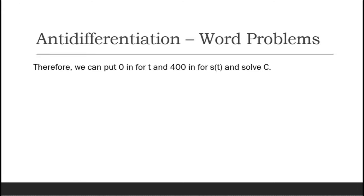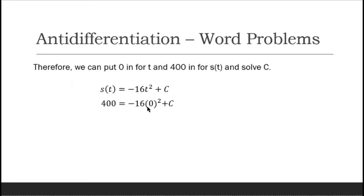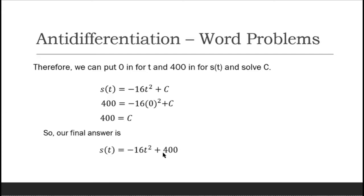We substitute t = 0 into the equation s(t) = -16t² + c and set s(0) = 400. So 400 = -16(0²) + c, which gives us 400 = 0 + c, therefore c = 400. Our final answer is s(t) = -16t² + 400.